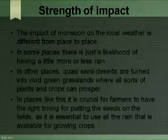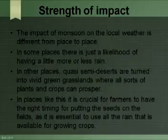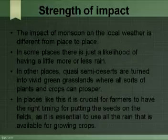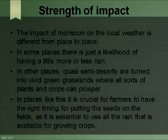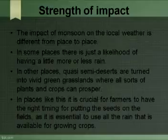The impact of the monsoon on the local weather is different from place to place. In some places, there is just a likelihood of having a little more or less rain. In other places, quasi-semi-deserts are turned into vivid green grasslands where all sorts of plants and crops prosper. The Indian monsoon turns large parts of India from a kind of semi-desert into green lands.